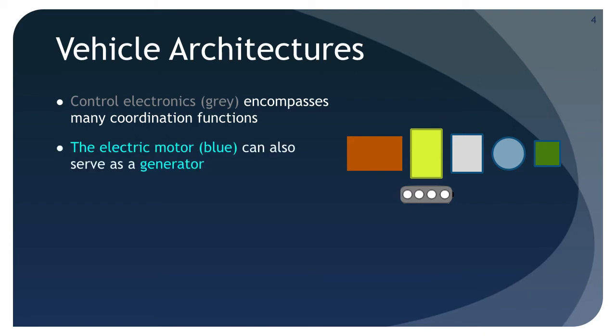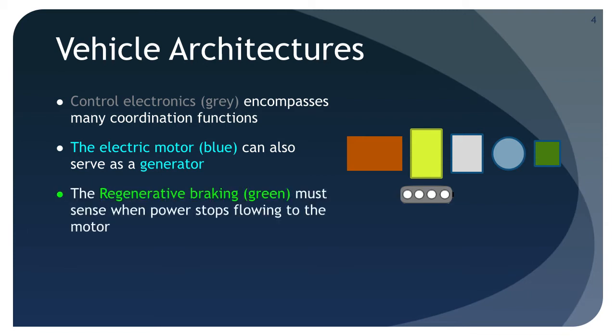The electric motor, shown in blue, has its own control functionality. It can serve as a generator, also shown in blue, during regen. The regenerative braking component, shown in green, senses when power flowing to the motor stops and initiates transformation of kinetic energy into electrical energy to recharge the battery. When an internal combustion engine is part of the EV architecture, it is shown stylistically as an inline four-cylinder motor. Now that we've established some basic conventions, it's time to look at each architecture.